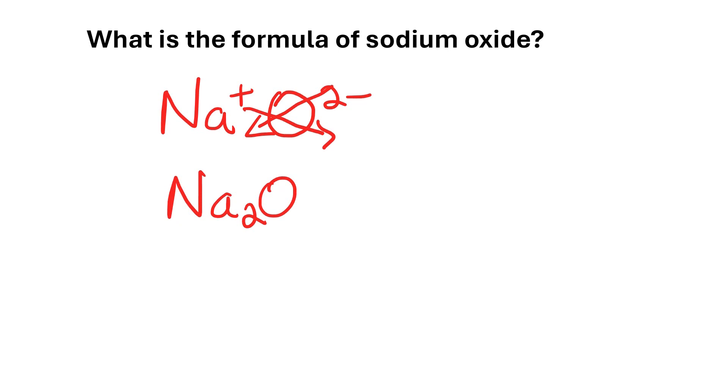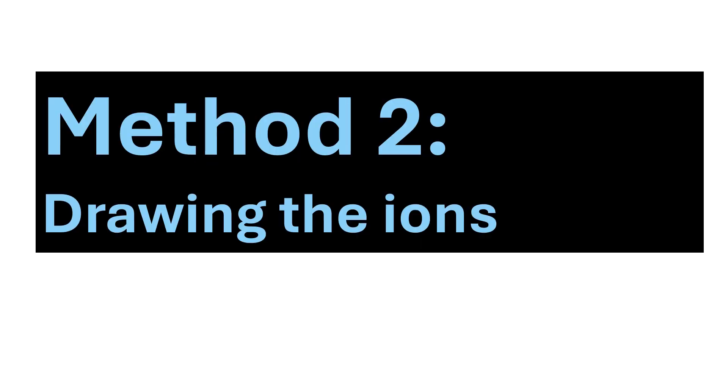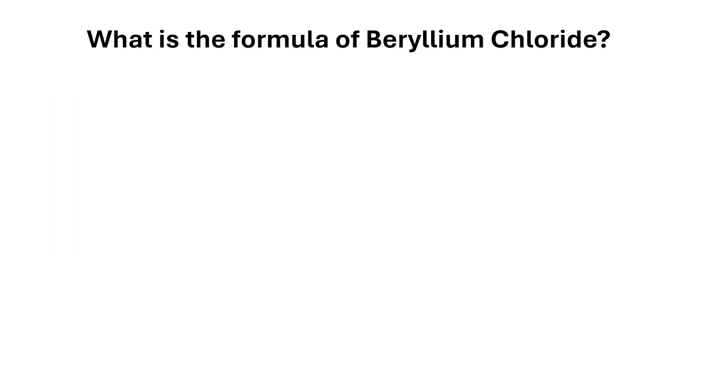Now if you found that method a bit confusing then we'll try a different method, and this is what I call drawing the ions. So let's try working out the formula of beryllium chloride. Beryllium forms a 2+ ion so each beryllium ion is a 2+, and chloride is a 1-. With this method what we try and do is get the right number of particles so the charges balance out.